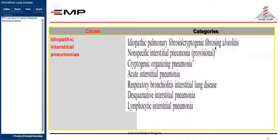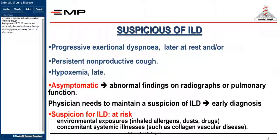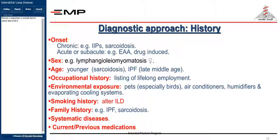You should exclude different causes of ILD before diagnosis of IPF by history, examination, and investigations. IPF is one cause of seven causes of idiopathic interstitial pneumonia. Dyspnea is a common and early presenting symptom of ILD.